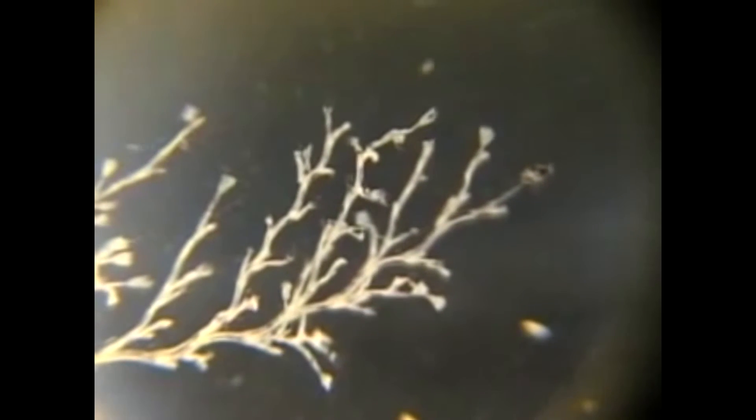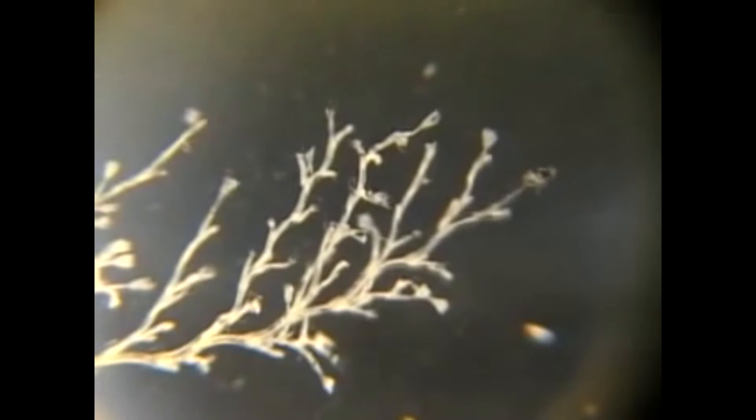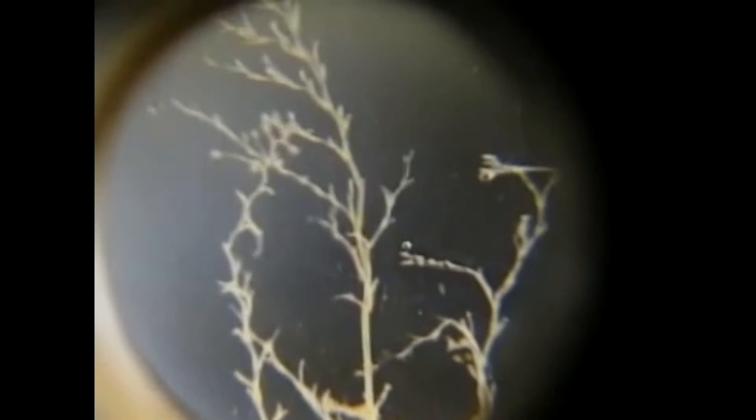They are colonial hydroids. The colony has two forms: the first is polyp, another is medusa. The life cycle of Obelia produces two separate stages for sexual and asexual reproduction.